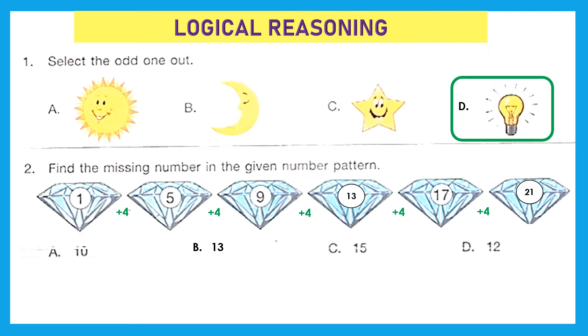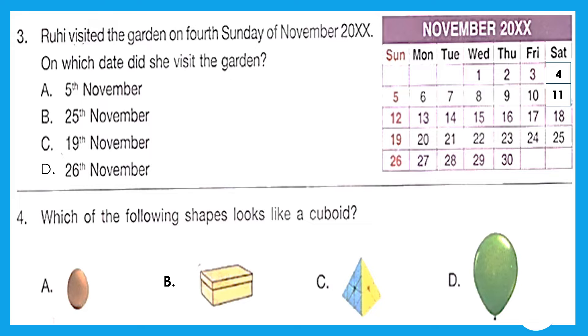Question 3: Ruhi visited the garden on fourth Sunday of November 20XX. On which date did she visit the garden? So we have to find the fourth Sunday from this calendar. Let's see: first one is this, second is 12th, third is 19th, and fourth is 26th November. So we got our answer. Answer is option D, 26th November.